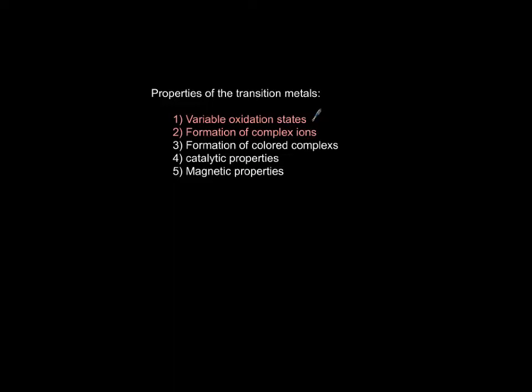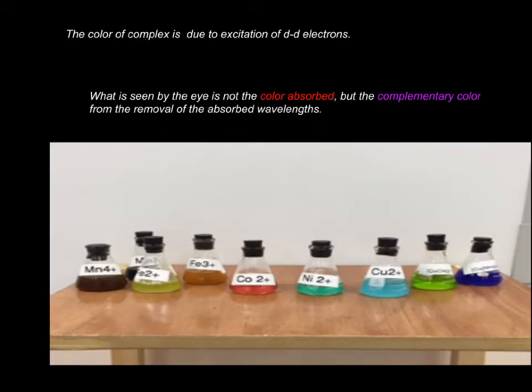So we agree transition metals have variable oxidation states if they form complex ions. Now the next item I'd like to talk about is the color of complex ions or transition metals. If you look at transition metals, you see they give you wonderful different colors. The question is, where does the color come from?